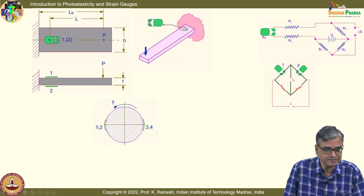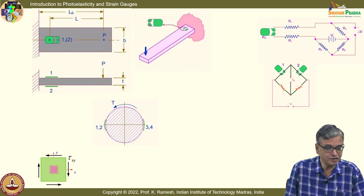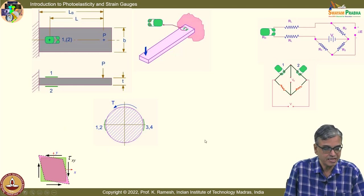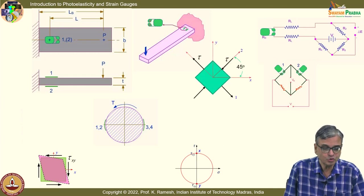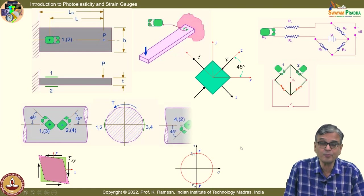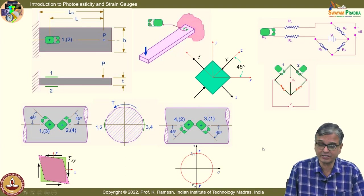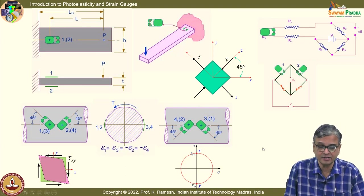We have also looked at how to extend this for torsion. A strain gauge by itself can measure only axial strain. We have understood in what way shear stress can be looked at as a combination of tension and compression. Using that and the Mohr circle, we identified that strain gauges have to be aligned at 45 degrees to the axis and connected appropriately in the Wheatstone bridge, so that you can quadruple the signal.